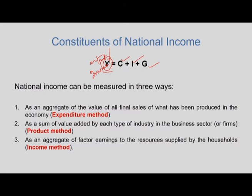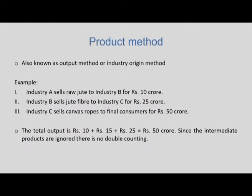Through this flow chart, national income is measured in three ways. First, the expenditure method — an aggregate of the value of all final sales produced in the economy. Second, the product method — a sum of value added by each type of industry in the business sector. Third, the income method — an aggregate of factor earnings to the resources supplied by households. It is important to be clear about problems such as double counting.